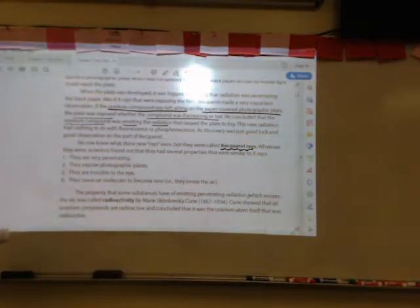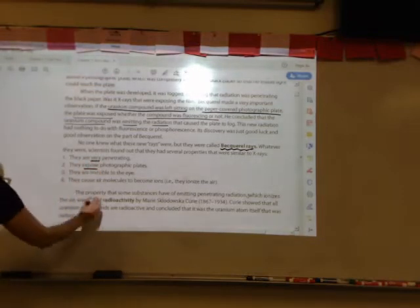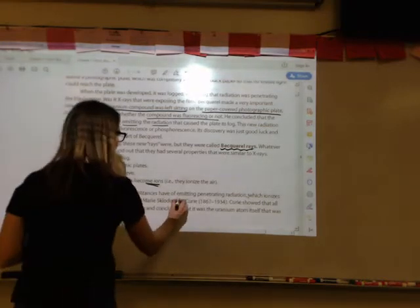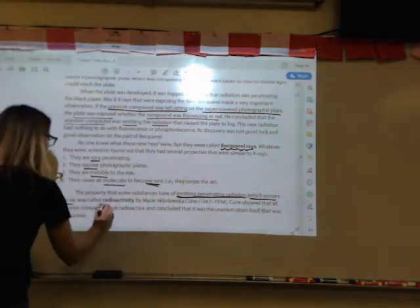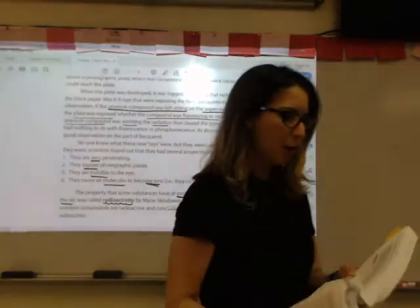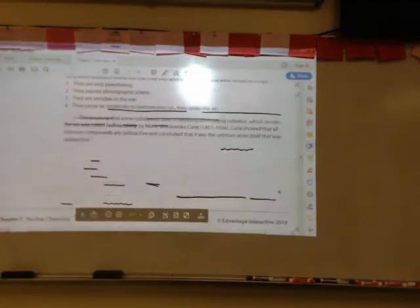Scientists found out that they had several properties that were similar to x-rays. They were very penetrating, they expose photographic plates, they're invisible to the eye, and they cause molecules to become ions. That means they ionize the air. The property that substances have of emitting penetrating radiation which ionizes the air is known as radioactivity. Marie Curie was the one that coined this term. She showed that all uranium compounds are radioactive and concluded that it was the uranium atom itself that was radioactive.